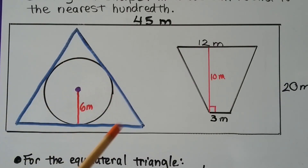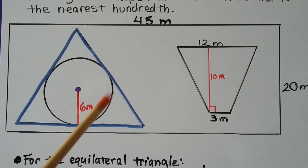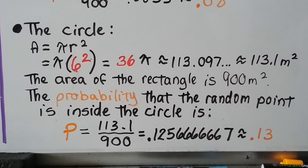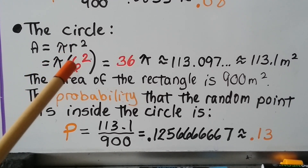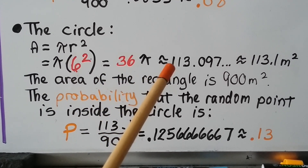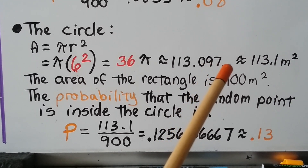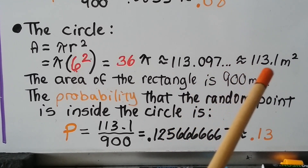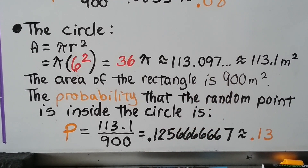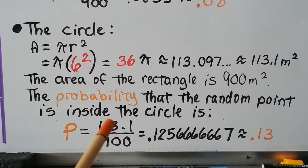Now let's find the probability of the point landing inside the circle with radius 6 meters. Area of the circle = π r² = 36π, which is approximately 113.1 meters squared. The rectangle area is 900 meters squared. The probability that the random point is inside the circle is 113.1 over 900, approximately 0.13.